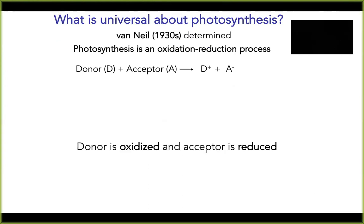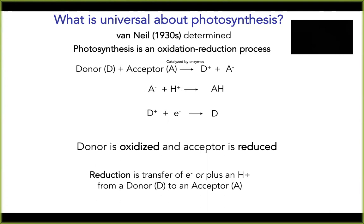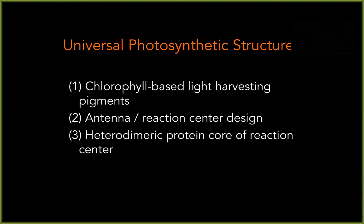As of last time, I told you what was universal photosynthesis. We can express this universality of photosynthesis in terms of a basic equation involving an oxidation-reduction process where we have a donor molecule and an acceptor molecule. The donor is going to be oxidized and the acceptor is going to be reduced. This universal equation of photosynthesis reflects this passing along of a stolen electron that is then donated.